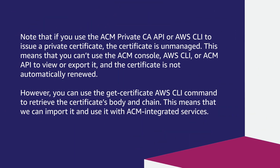Note that if you use the ACM private CA API or AWS CLI to issue a private certificate, the certificate is unmanaged. This means that you can't use the ACM console, AWS CLI, or ACM API to view or export it, and the certificate is not automatically renewed. However, you can use the get certificate AWS CLI command to retrieve the certificate's body and chain, which means that we can import it and use it with ACM integrated services.